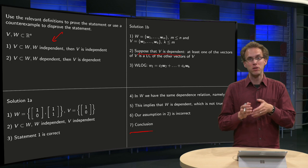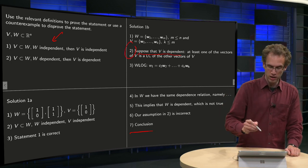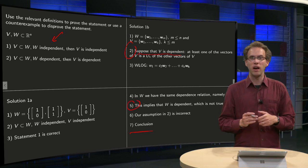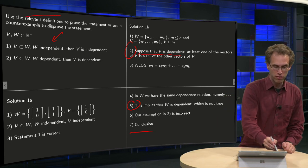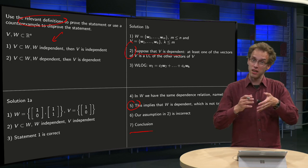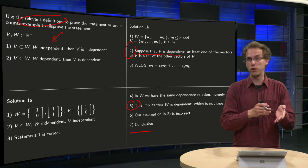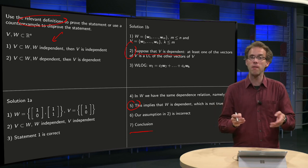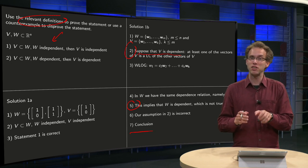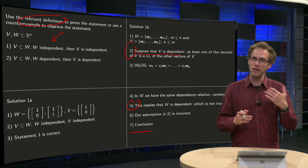But if you don't define dependence like this, then actually, in this step 2 over here you use the theorem, and in step 5 you also use the theorem, and the question is to use the relevant definitions to prove the statement. So, if your definition is a different one, namely, the set is dependent if c1 v1 up to cn vn is 0 only as a trivial solution, if you have that definition for dependence of a set, then actually this proof is not fully correct, because you are using theorems in the proof, and not the definitions.